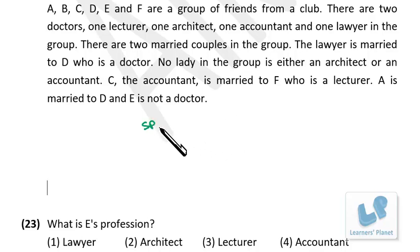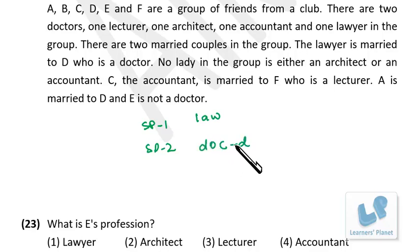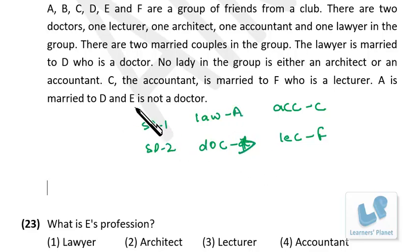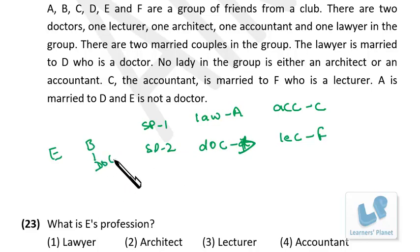We don't know who is male or female, so I write 'spouse one, spouse two.' The lawyer is married to D, who is a doctor. The accountant C is married to F, who is a lecturer. A is married to D, and E is not a doctor. So we're left with E and B. There were two doctors — one is already assigned, so the other doctor should be B, and E is the architect.